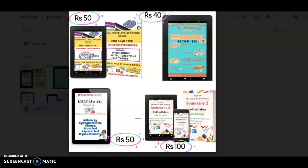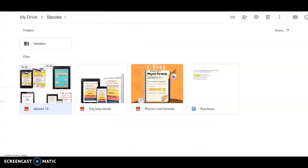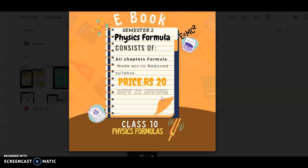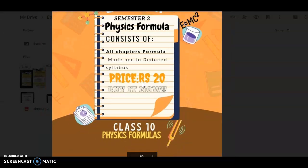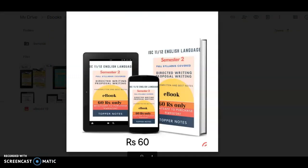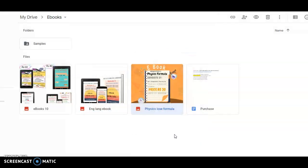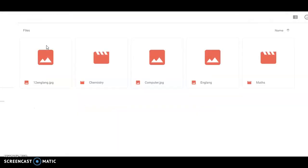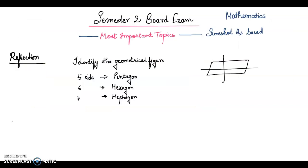In mathematics you will get chapter wise handwritten notes, then all formulas are covered, expected solved questions are there. In chemistry all reactions are there, computer applications programming output questions and theory, English language email notice and letter writing everything, answers and formats. Then next is physics ICSE formula ebook with all the formulas according to the reduced syllabus. If you want to purchase it the link is in the description box. The samples are also attached in the link.